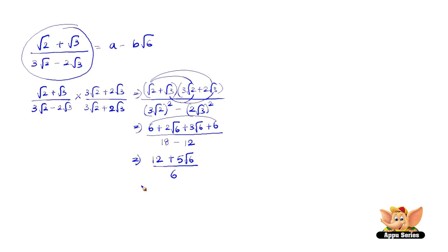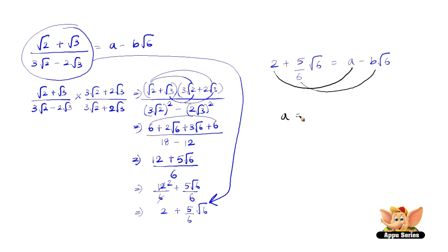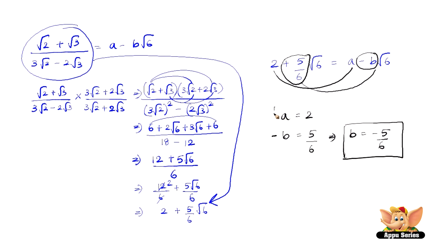Further simplifying: 12/6 + 5√6/6 = 2 + (5/6)√6. Now equating 2 + (5/6)√6 to a - b√6: since the expression has +5/6√6 and the right side has -b√6, we get -b = 5/6, therefore b = -5/6. And a = 2. So a = 2 and b = -5/6.